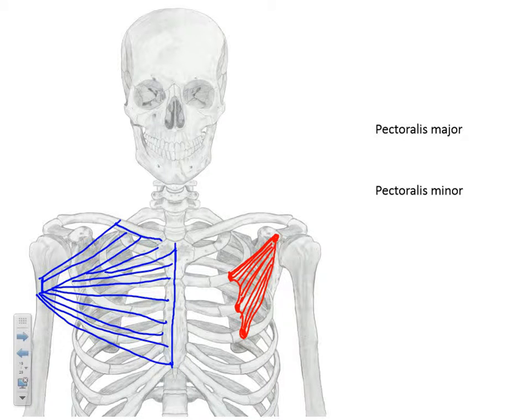One final muscle to talk about in relation to the anterior pectoral region, not often talked about, but subclavius is a small muscle that originates off of the first rib fairly medially and then inserts on the underside of the clavicle.